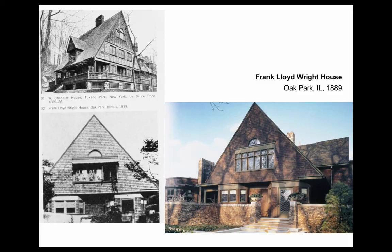Here we start seeing some initial inklings of Wright's idea. This is Wright's house for himself, 1889, although it keeps expanding. I showed you this last week — this is Bruce Price, a New York architect; this is the Chandler house upstate. We see a sloped roof. This is Wright — the sloped roof, plating windows, two bays. So Wright's starting off in the shingle style.